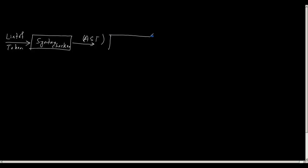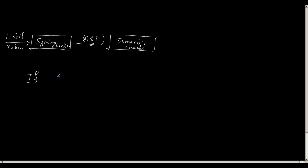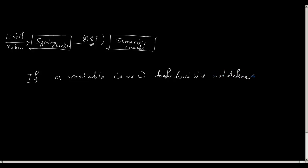The next stage is called the semantic checker. This phase of the compiler tries to follow certain semantic rules of the given language. For example, in C, a variable cannot be used if it has not been defined. If a variable is used before it is defined, then it is a semantic error.